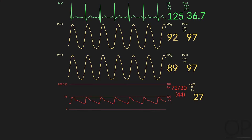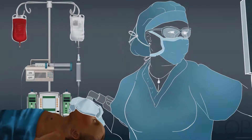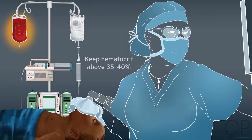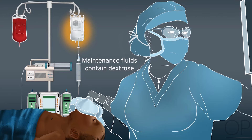An age-appropriate or slightly higher blood pressure should be maintained to prevent excessive right-to-left shunting. For prolonged neonatal surgery in a cyanotic patient, careful fluid management is important. Addressing the impacts of blood loss on the preload-dependent Tetralogy of Fallot physiology should be part of the preoperative team discussion. Blood must be readily available in the operating room along with robust venous access to administer large volumes of fluid if necessary. Blood and insensible fluid losses need to be closely monitored and substituted. The hematocrit should be kept above 35-40% to maintain adequate tissue oxygenation, and maintenance IV fluid should contain dextrose to avoid hypoglycemia.